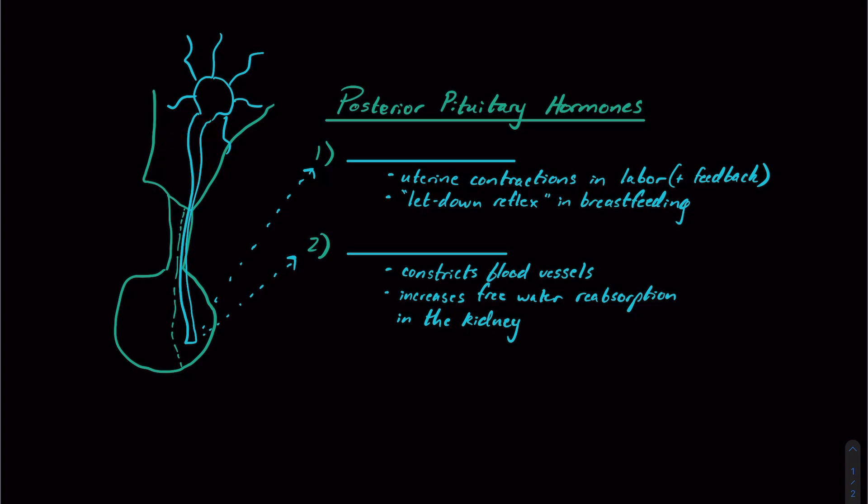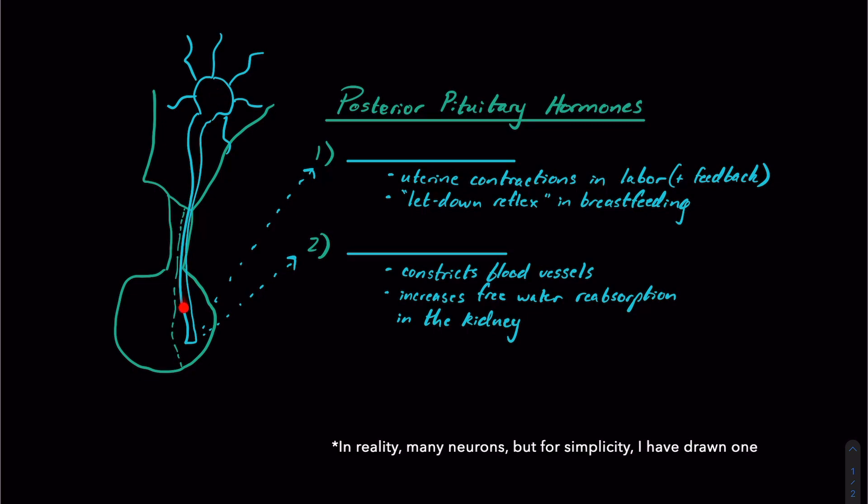It's going to be a region in your brain that connects to the hypothalamus up here. And different than the hypothalamus to anterior pituitary connection, which is primarily going to be vascular, the posterior pituitary is connected by one large neuron.